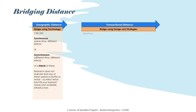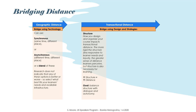Research has identified three design features that have an impact on this sense of distance. The first one is structure. How you design and organize your course impacts this sense of distance. The more rigid the structure — here's the content, go through it at this pace, on your own, with less responsiveness to learner needs — the greater the sense of distance learners perceive. But structure is also necessary for learning, so increased structure equals increased sense of distance. You want to balance structure with dialogue and autonomy, which are the other two features.